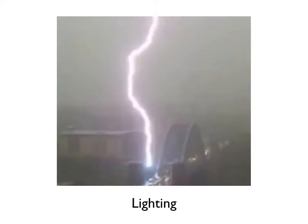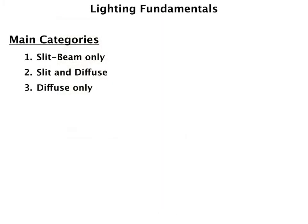To give you an example of some of the challenges that we face in ophthalmic photography, I wanted to show this picture. It's very dramatic. You have a very bright beam surrounded by a darker, diffuse background, and that shows you the very stark contrast that we see when we're taking ophthalmic photographs. There are three main categories of lighting: a slit beam only, a slit and a diffuse light used together, and diffuse only. Each one of these categories has a purpose, but before we talk about clinical photography, I just want to talk about some of the fundamentals of how we capture these photographs.